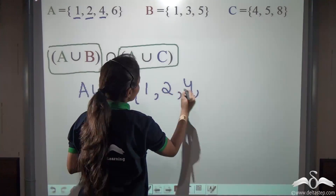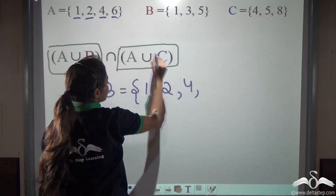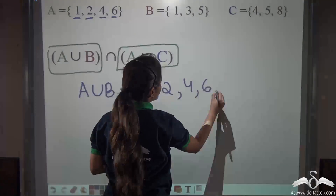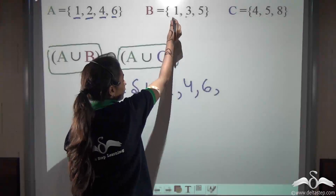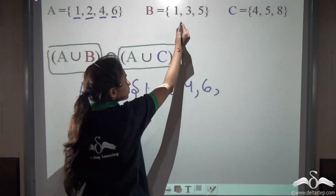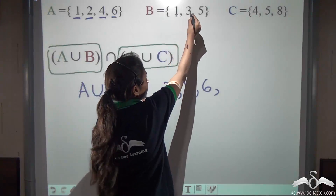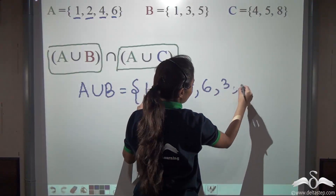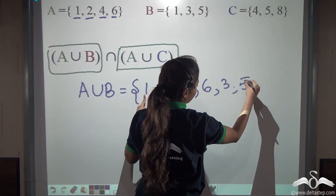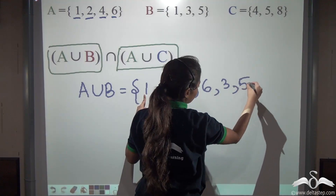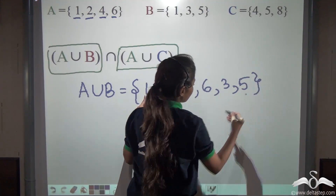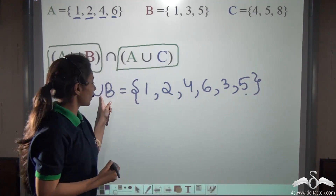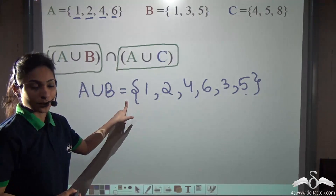1 is already present, so we will not write 1 again; then 3 and 5 from B. So A union B = {1, 2, 4, 6, 3, 5}. Find out A union C like this.